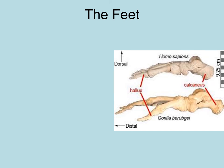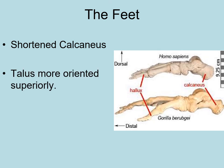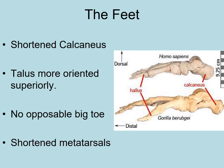Changes in the feet include a shortened calcaneus bone — comparing a gorilla to us, their calcaneus is much longer. The talus has been oriented more superiorly. We lost the opposable big toe — labeled as the hallux — unlike our gorilla relatives. We have shortened metatarsal bones, making our feet relatively stiff with shorter toes compared to our ape relatives.